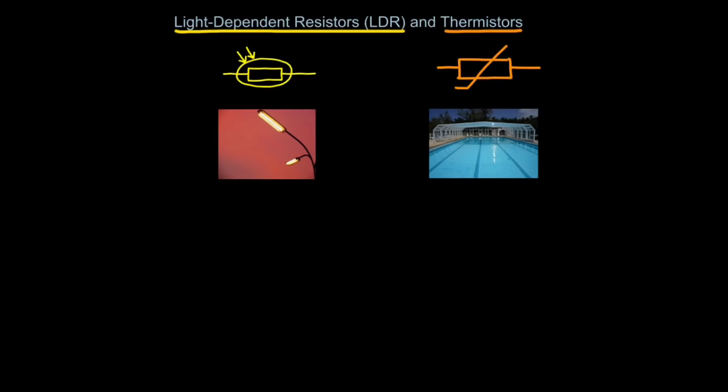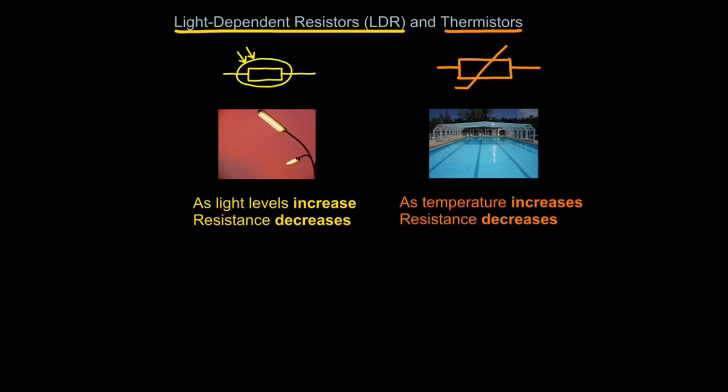Now you're not going to need to know a lot about these - you just need to basically describe how they work. You will never have to fully explain how they work because it's very sophisticated and complex. They work in a similar way. Light-dependent resistors work as follows: As light levels increase, the resistance in the circuit decreases. In other words, when it's bright, resistance is low. When it's dark, resistance is high in the light-dependent resistor.